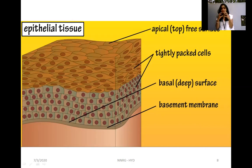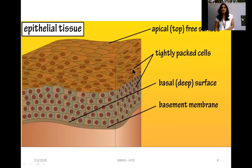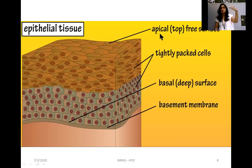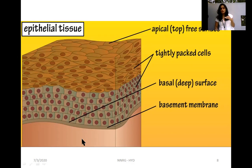The epithelial tissue is composed of very tightly packed cells. Because cells are so closely packed, there is negligible or absent extracellular matrix between them. On the top there is a free surface exposed to the external environment — this is called the apical surface. At the basal deep surface there is a basement membrane, and finally this basement membrane is connected to the underlying connective tissue.